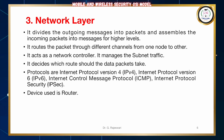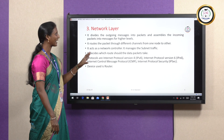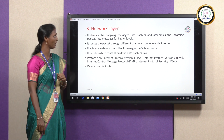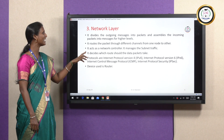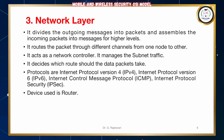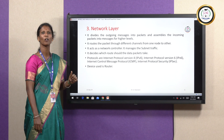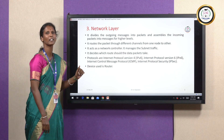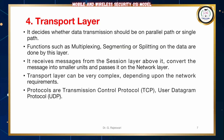The third layer is the Network Layer. It divides the outgoing messages into packets and assembles the incoming packets into messages for higher levels. It routes a packet through different channels from one node to the other node. It acts as a network controller and manages the subnet traffic. It also decides which route the data should take to travel. Protocols used for this network layer are Internet Protocol Version 4 (IPv4), Internet Protocol Version 6 (IPv6), Internet Control Message Protocol (ICMP), and Internet Protocol Security (IPsec). The device used in this network layer is a router.